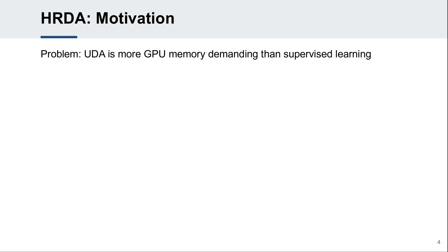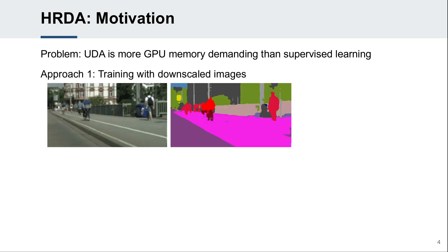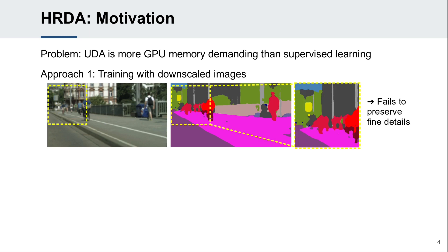UDA methods are usually more GPU memory demanding than supervised learning, as UDA often requires images from multiple domains, additional networks, and additional losses. Therefore, most UDA semantic segmentation methods follow the convention of downscaling images due to GPU memory constraints. We question this design, as low-resolution predictions often fail to preserve fine details.